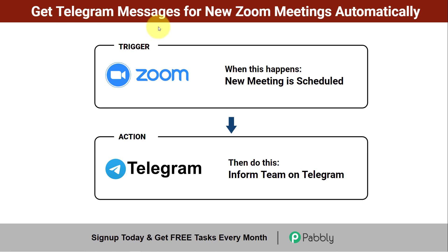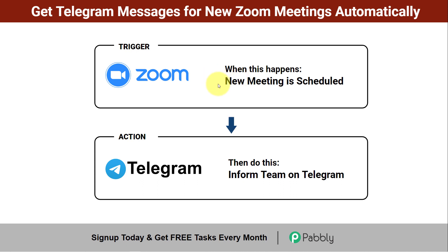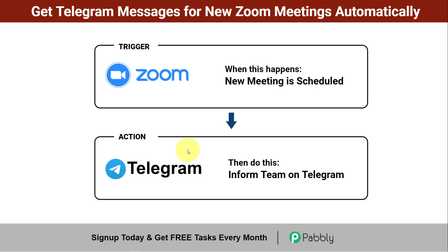In this video I will show you how to get Telegram messages for new Zoom meetings automatically. Assume that you have created a group in Telegram with all your team members and whenever you schedule any new meeting into your Zoom account, you will have to manually copy the meeting URL, meeting date and time and share it with your team. But what if I tell you that you can entirely automate this process? You just need to schedule a meeting into your Zoom account and the details will be shared automatically on your Telegram channel with your team. Come with me and I will show you the whole process step by step.